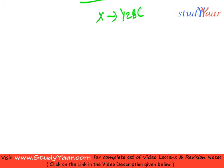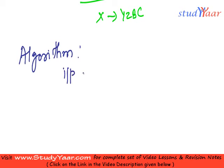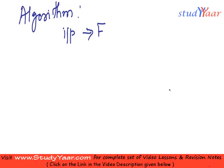Now we will understand an algorithm that computes the canonical cover from a given set of FDs. My input is F, the set of FDs for which we want to generate a canonical cover, and my output is FC, the canonical cover.